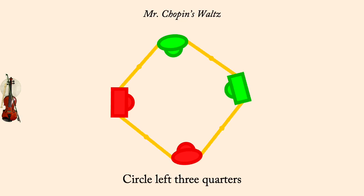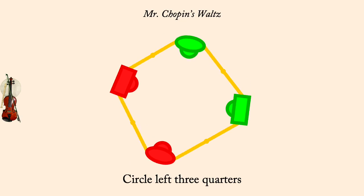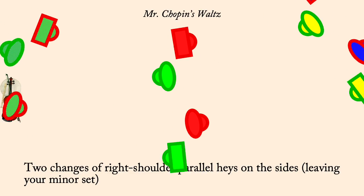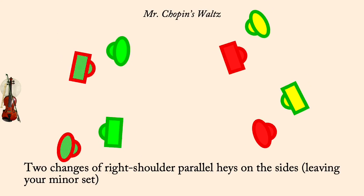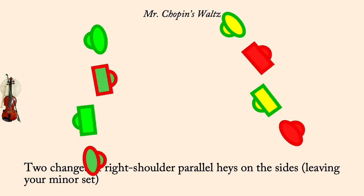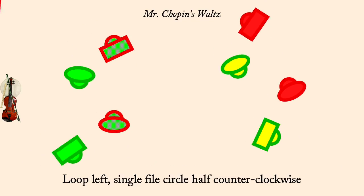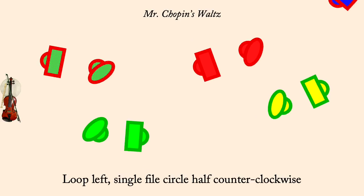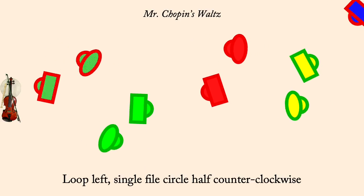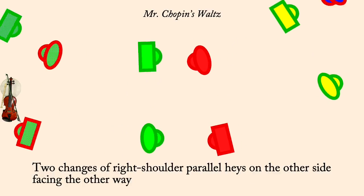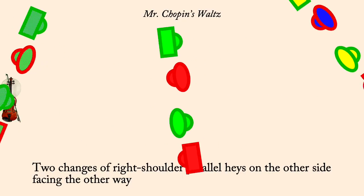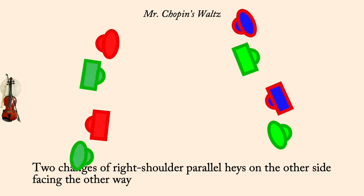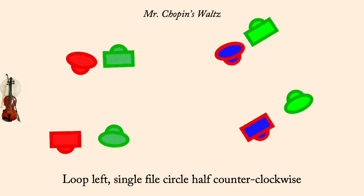Two changes of parallel haze on the sides. Loop left, single file circle half. Two changes of parallel haze on the sides. Loop left, single file circle half.